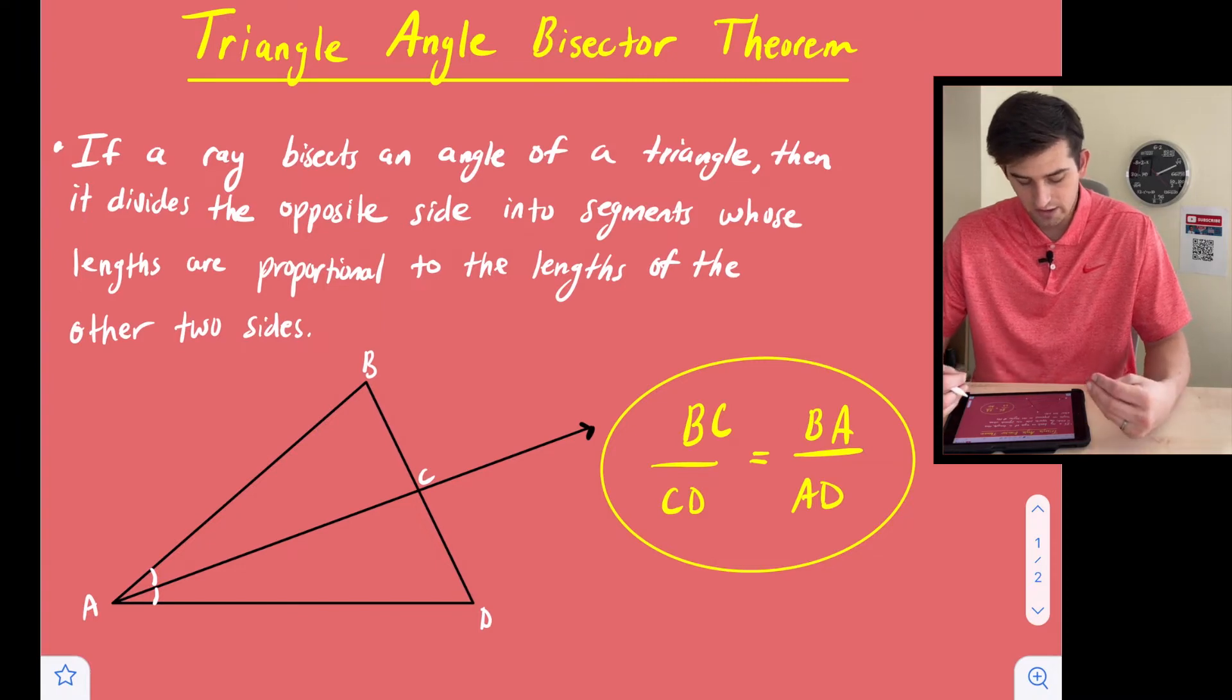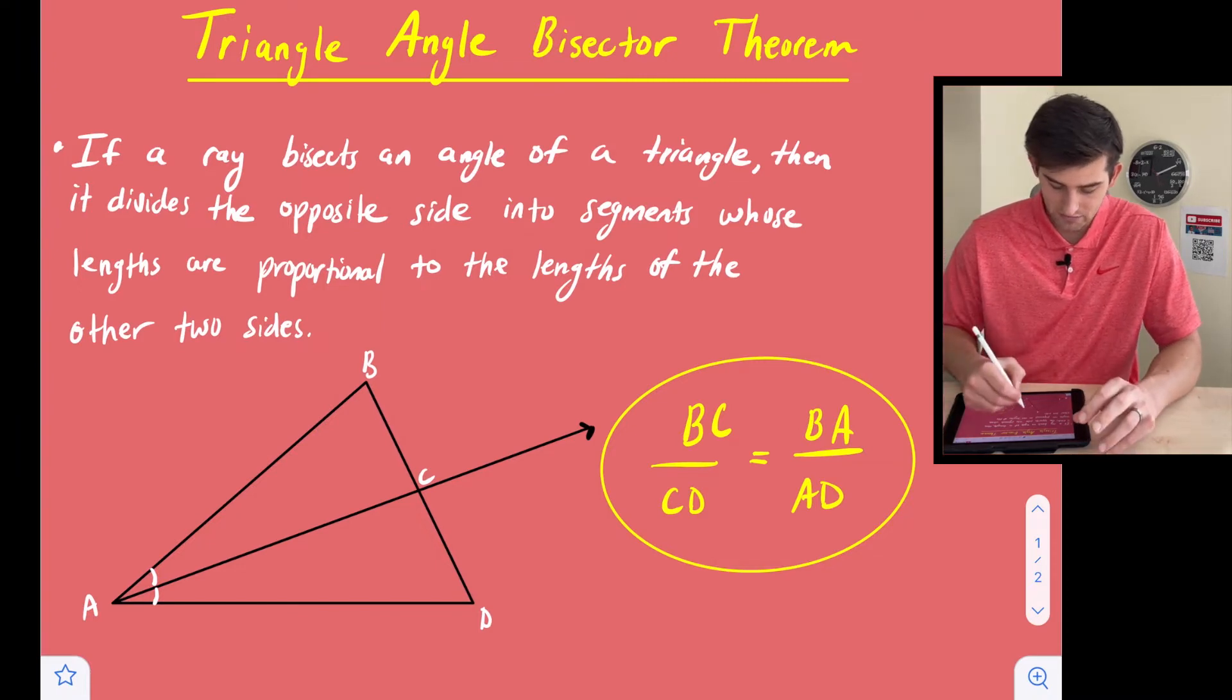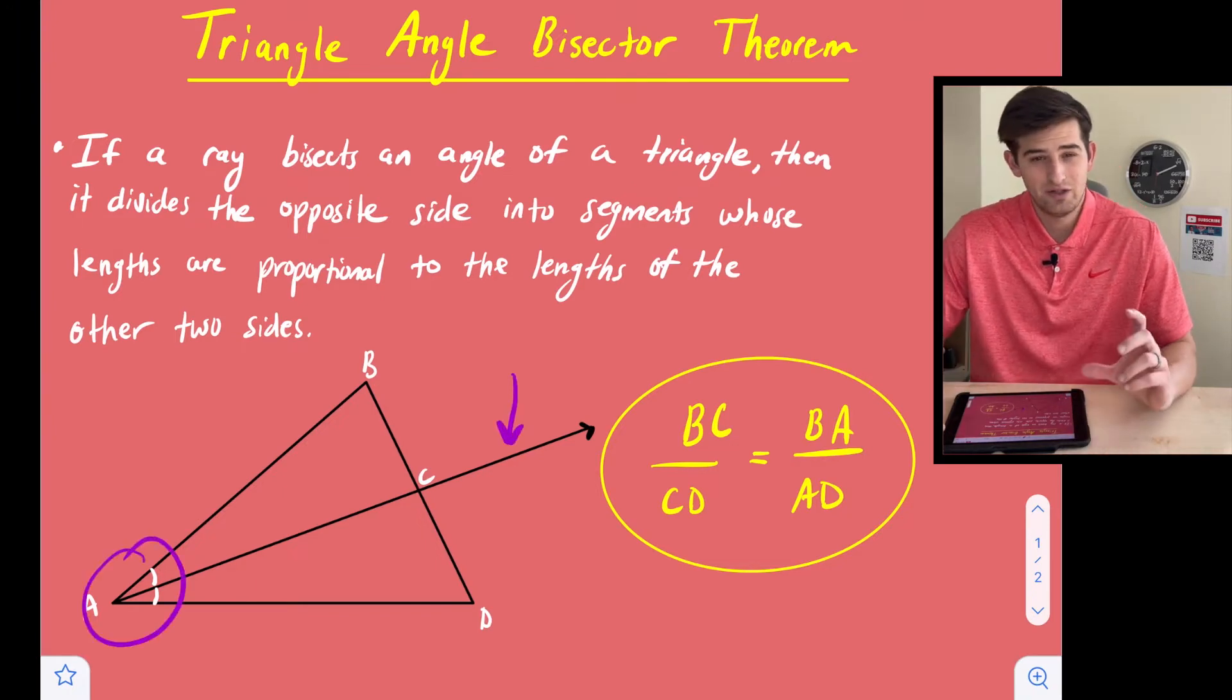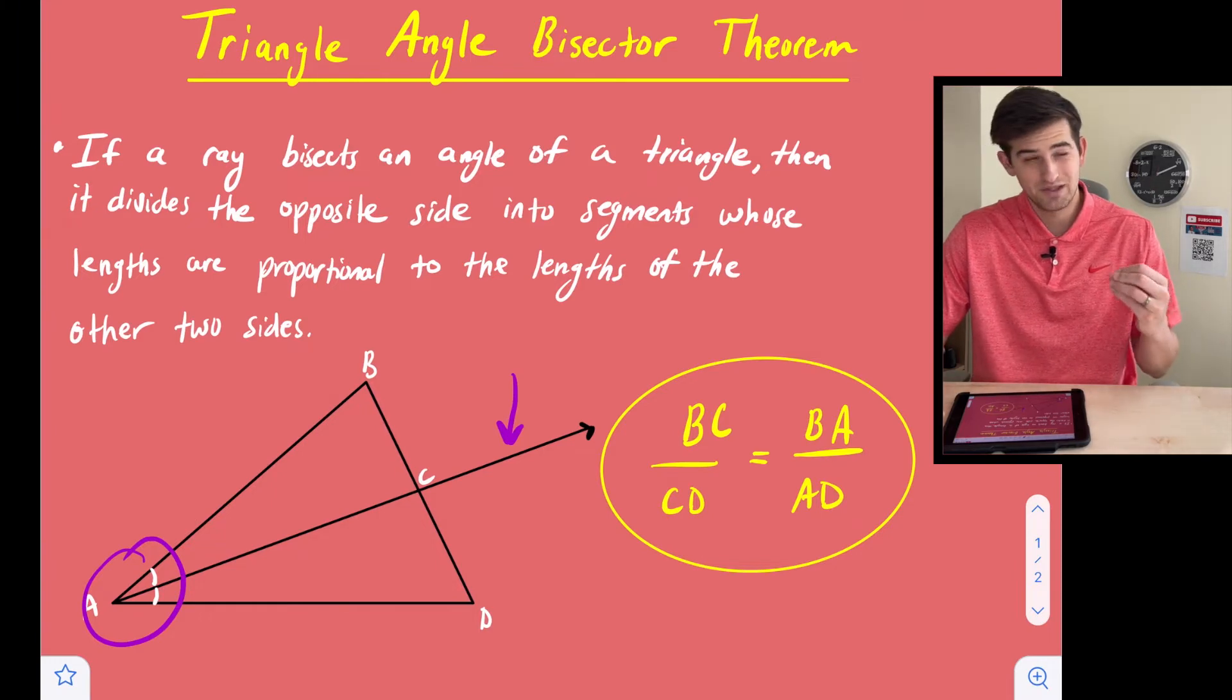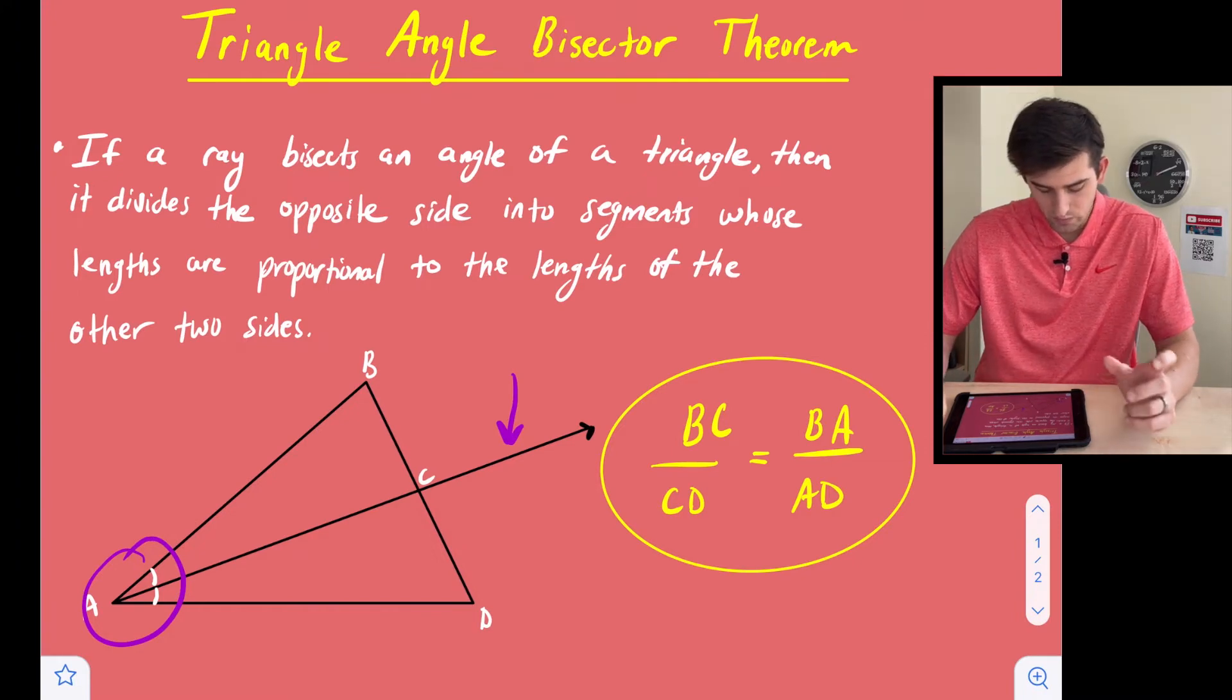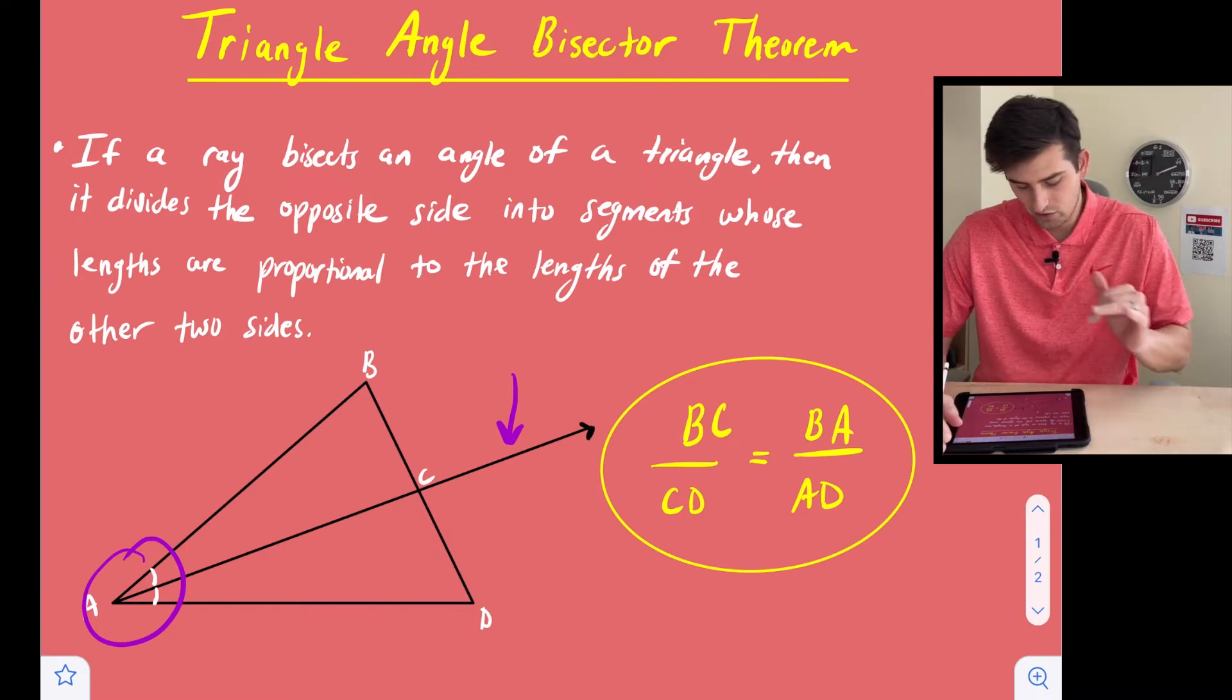So let's look at our diagram and dissect this description. If a ray bisects an angle, so here's our ray, and this right here is what the definition of bisect means. It's going to take angle A and separate it or divide it into two congruent angles. So that's what those little white tick marks mean right there, or those little arcs.